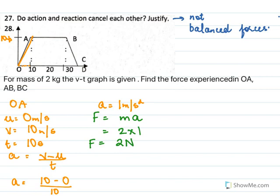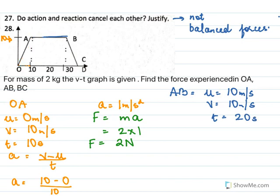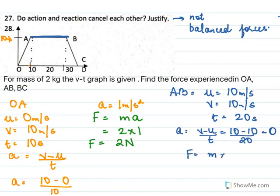Along AB: the velocity remains the same — initial velocity is 10 m/s and final velocity is also 10 m/s over 20 seconds. So acceleration = (10 − 10)/20 = 0. Force = m × a = 2 × 0 = 0 Newtons. Along AB the force is 0 Newtons.